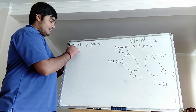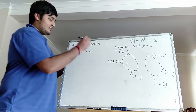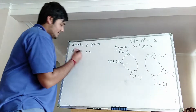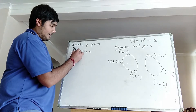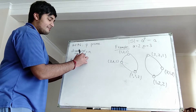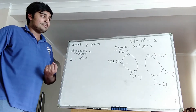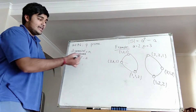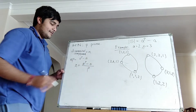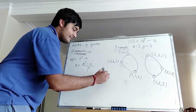So the number of connected components — let's call this N — times P is equal to the total number of vertices, which is A to the P minus A. So N equals (A to the P minus A) divided by P. Because N is a natural number, that means this expression is a natural number, and thus we can conclude that P divides A to the P minus A. And we've proved Fermat's Little Theorem.